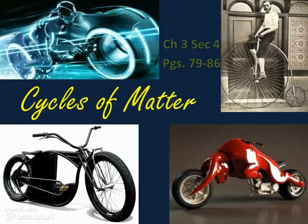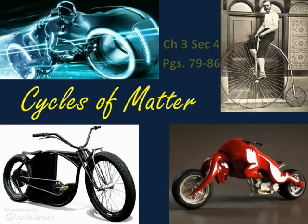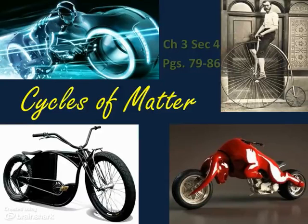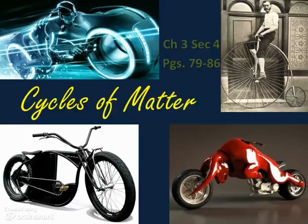These are the basis for life's most important compounds: water, carbohydrates, lipids, proteins, and nucleic acids. But there's a law in all of science about the conservation of mass, matter, and energy. Mass, matter, and energy are never created, nor are they ever destroyed. Organisms cannot manufacture these elements, and they do not use them all up. So where do organisms get these elements, and how does the availability of these elements affect ecosystems?